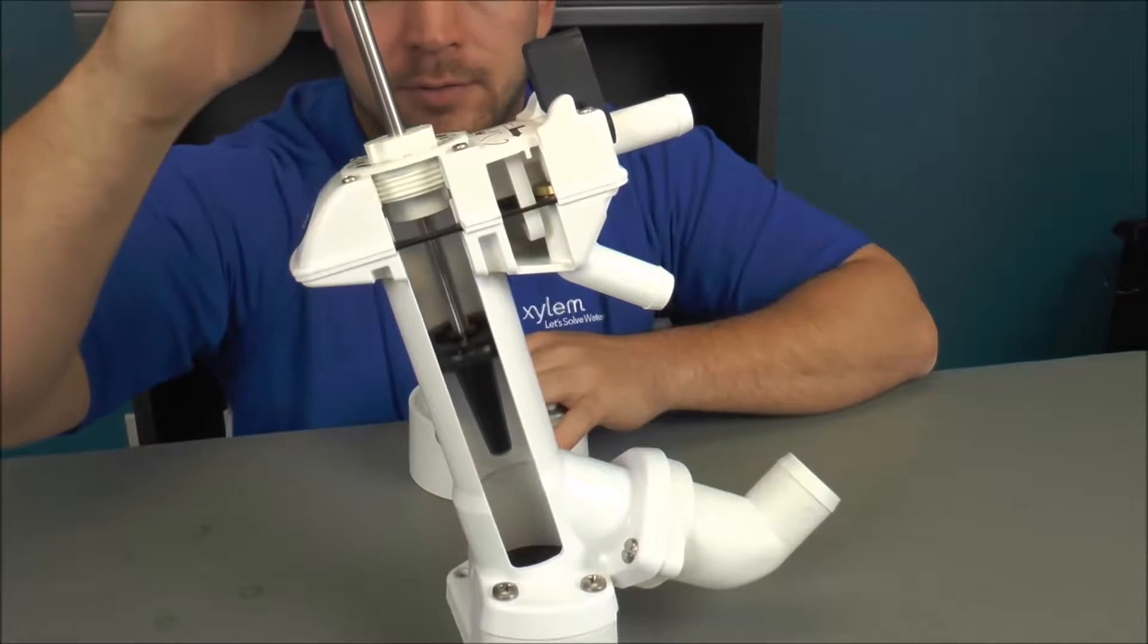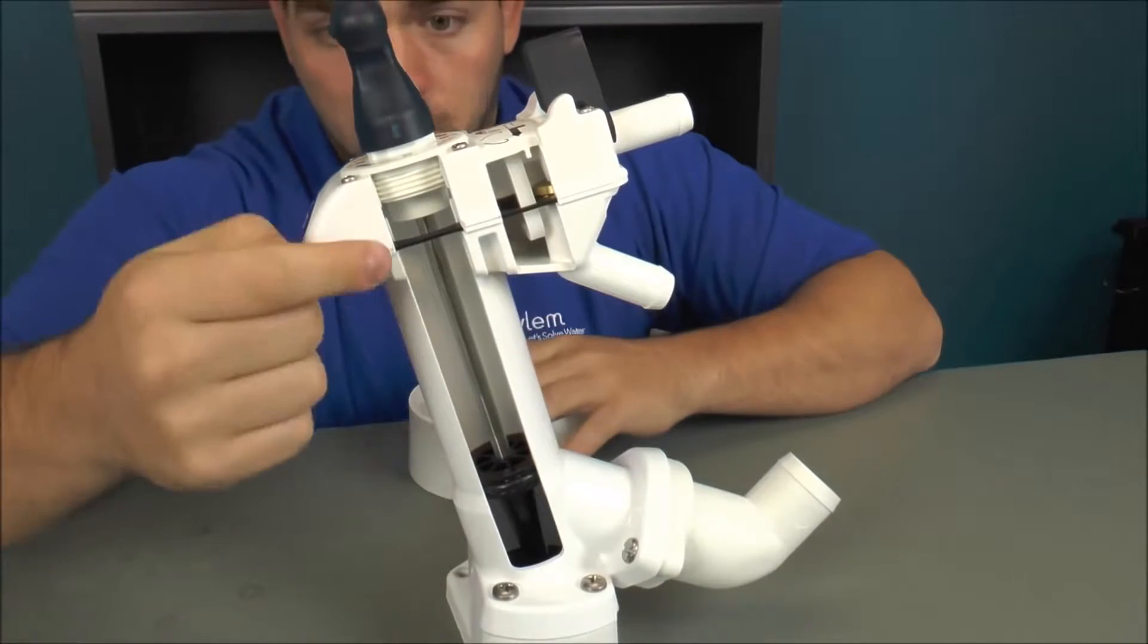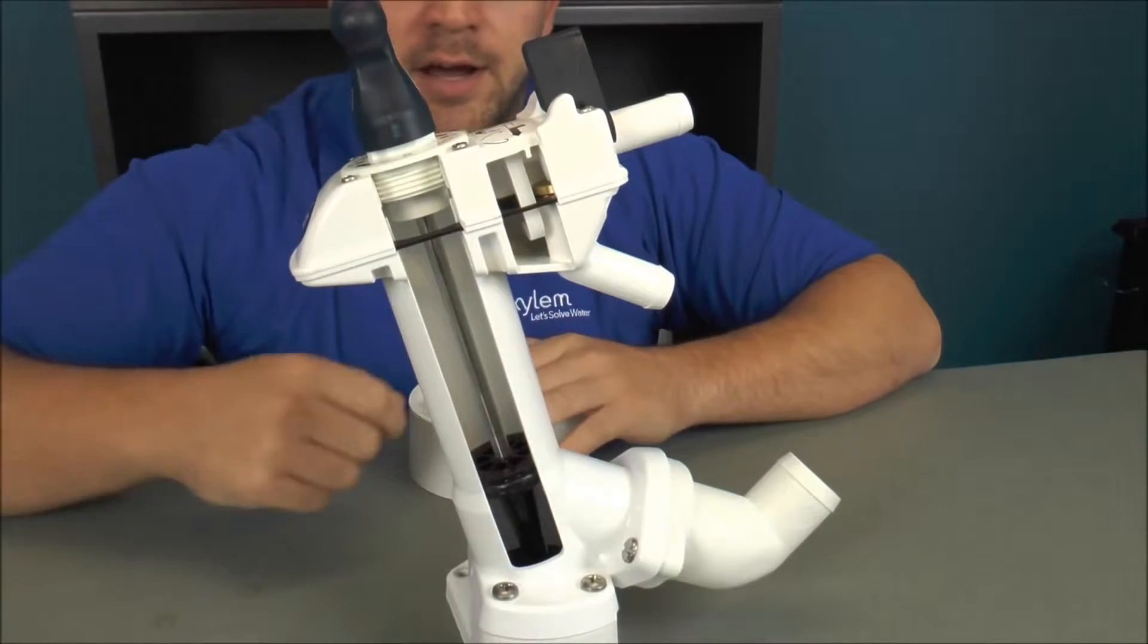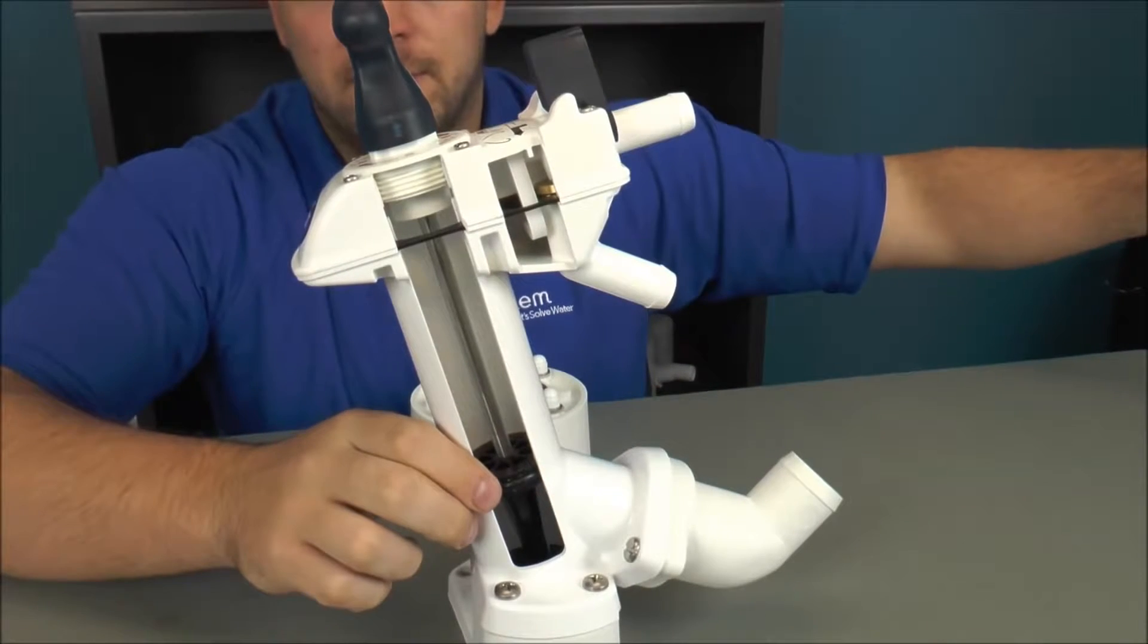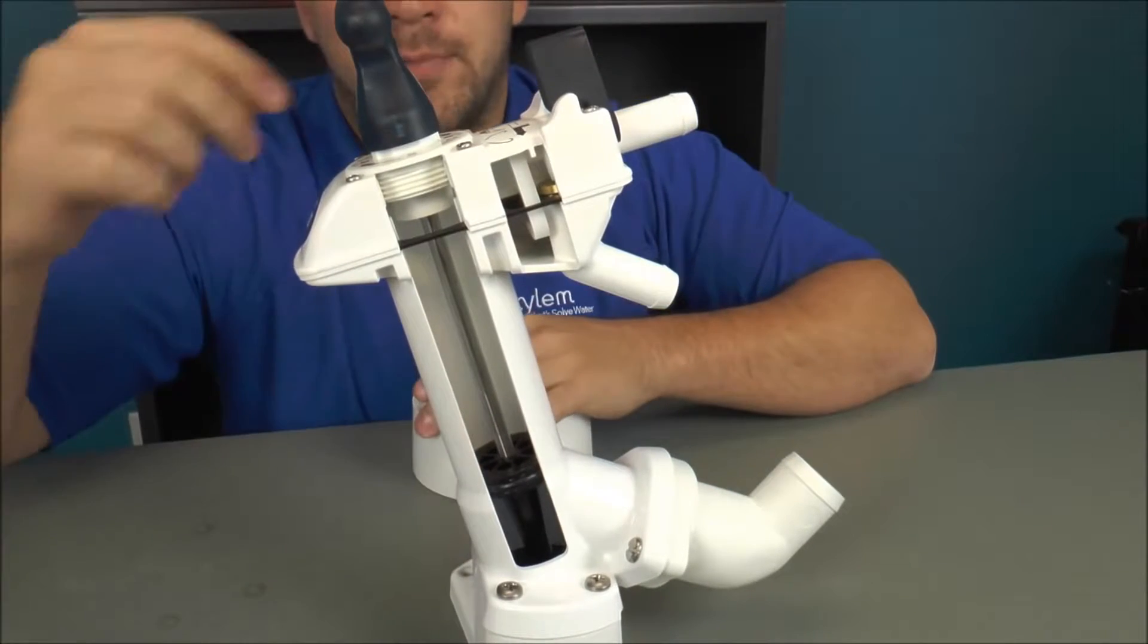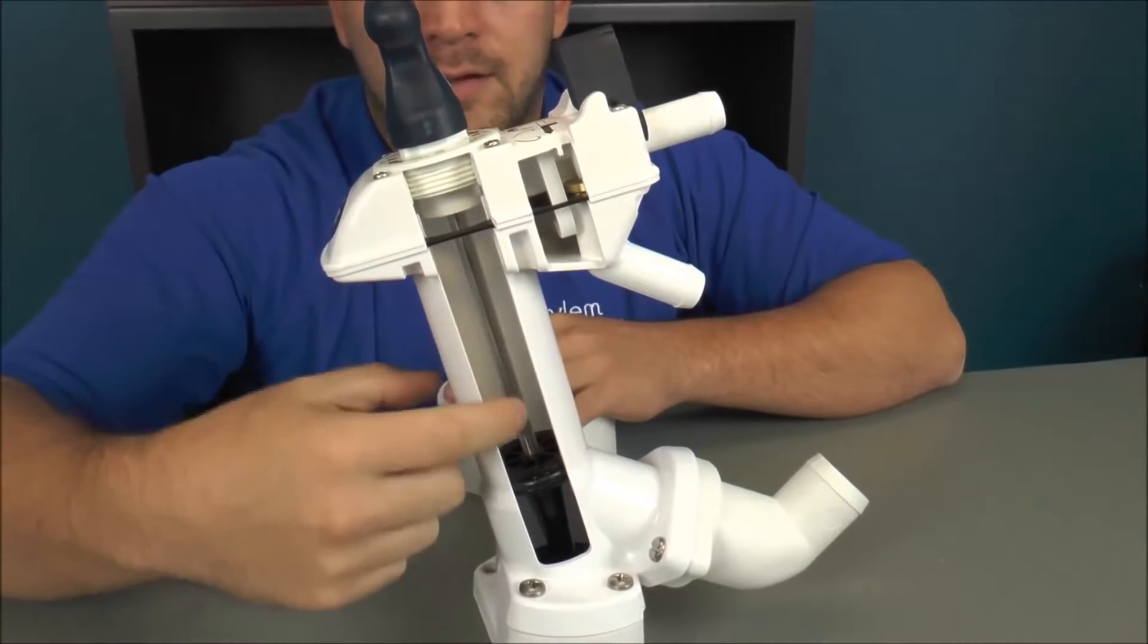Now when I push down on the handle, this is waste out, water in. So when I push down, waste is being evacuated from the pump assembly down your discharge hose line. And the water in is coming from the valve cover into this upper half of the pump chamber.